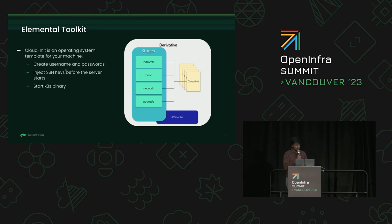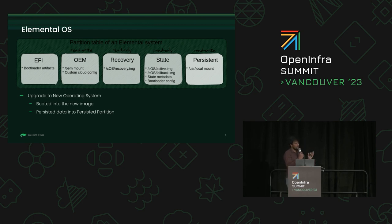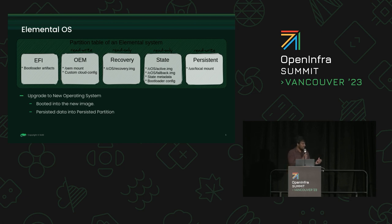At the server location, Elemental Toolkit discards the currently running OS image and boots into the new OCI artifact. You might wonder how data is persisted. The Elemental OS contains five partitions — the key one is the persistent partition. You can specify directories, such as those for a single-node Kubernetes cluster, that need to persist. When upgrading, that partition is untouched and changes only occur in the state partition.